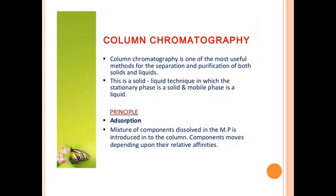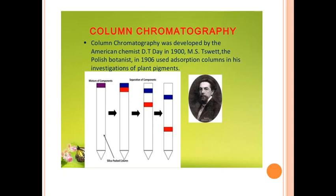The principle behind column chromatography is adsorption — where the components are adsorbed onto the surface of the stationary phase rather than penetrating into it. The mixture of components dissolved in the mobile phase is introduced into the column and each component moves depending upon its relative affinity for the stationary phase.